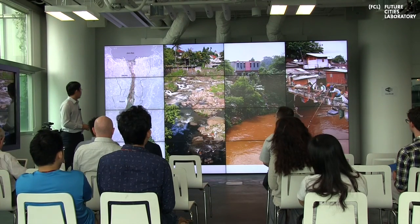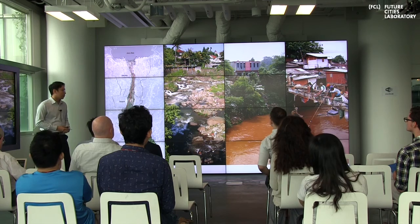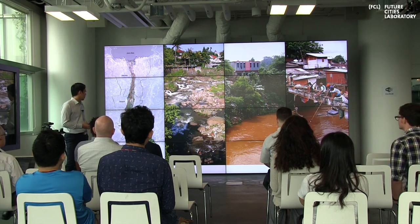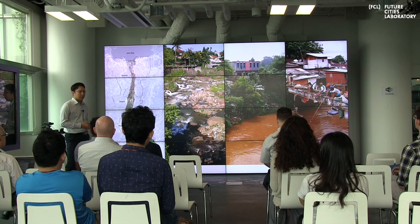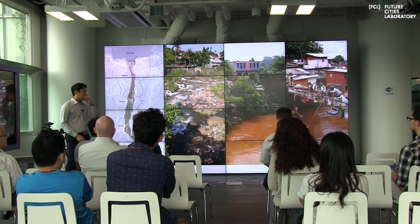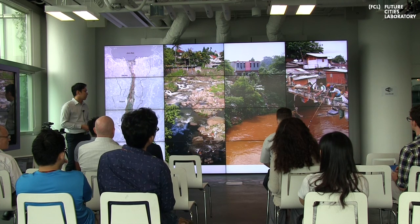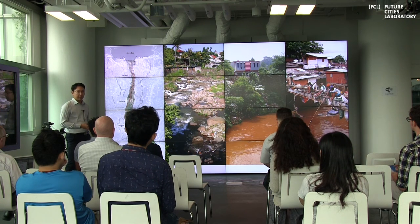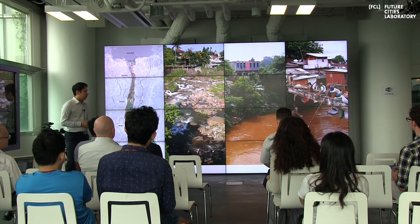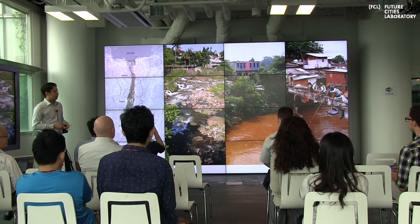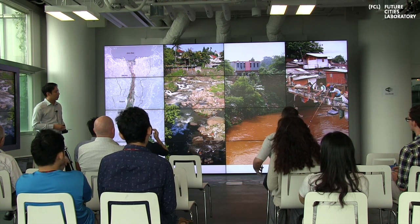For those not familiar with the Ciliwung River, it's a river that runs through three major cities in West Java, Indonesia — Bogor, Depok, and the capital, Jakarta. From the photographs alone, you can tell that as the river goes along its 120 kilometers through these cities, the water gets degraded. The river is constantly being abused, and people are still using it for livelihood — fishermen fishing for plastic bottles that float down the river.